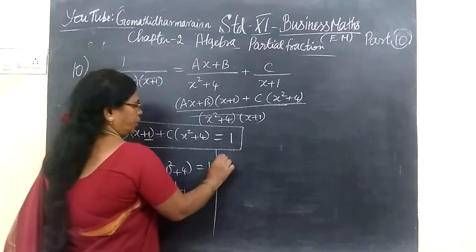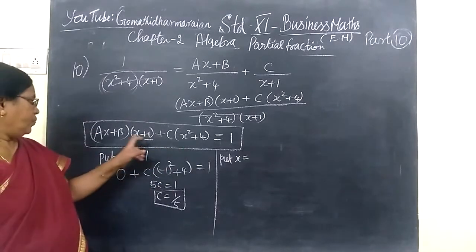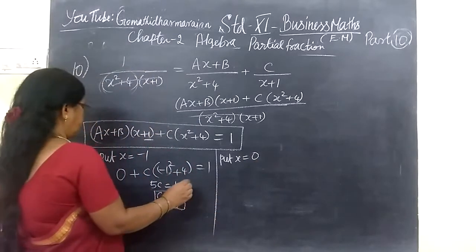Then next, put x equal to 0. This is equal to 0 squared. This is equal to 0 squared. This is equal to 0.